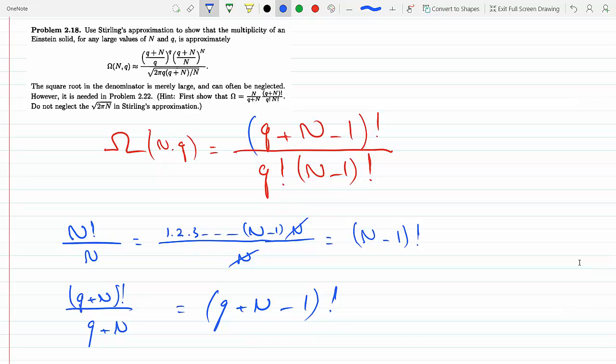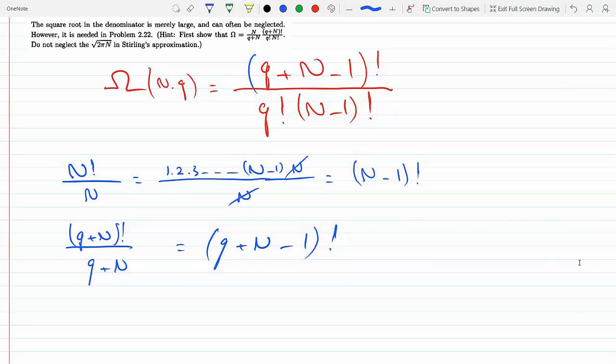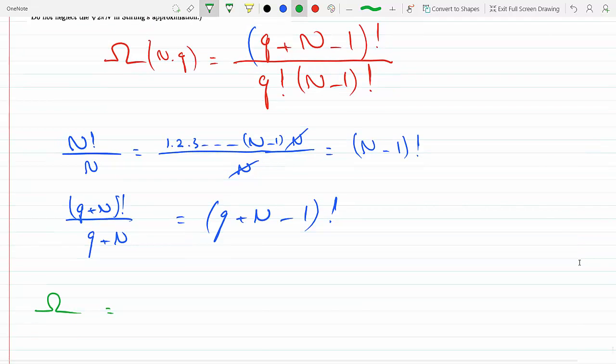I will plug those in above in the red equation for the multiplicity. When I do that, I will get I'm replacing (q+n-1)! with (q+n)! over (q+n).